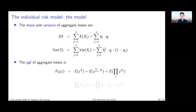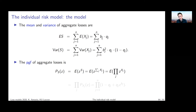For the variance of S, we can use the sum of the variances of the xj's due to the independence assumption. To derive the variance of xj, compute the second moment — the expected value of xj squared — and then subtract the squared expected value of xj. That gives the variance expression shown here. This yields both the expected value and variance of S.